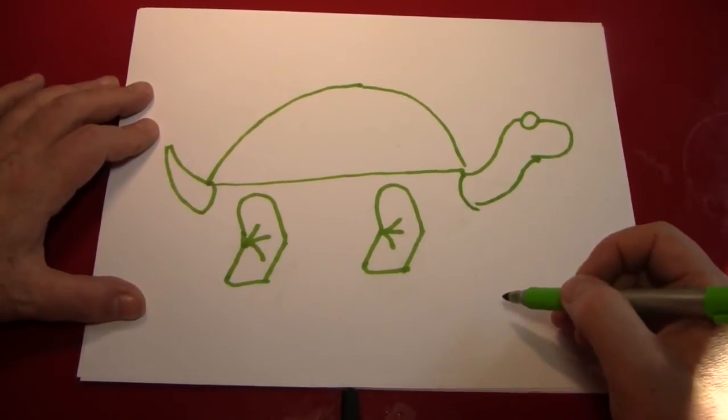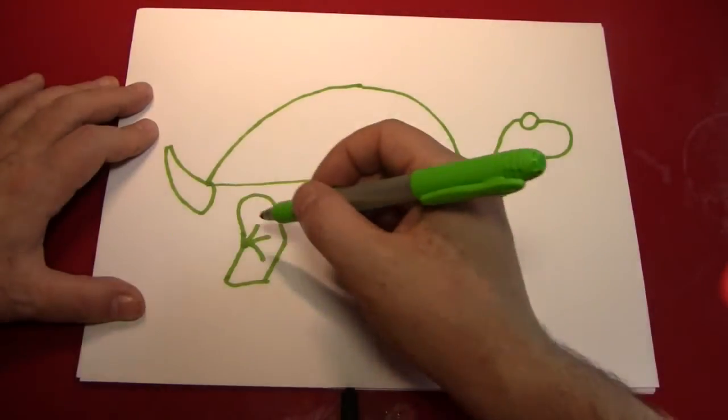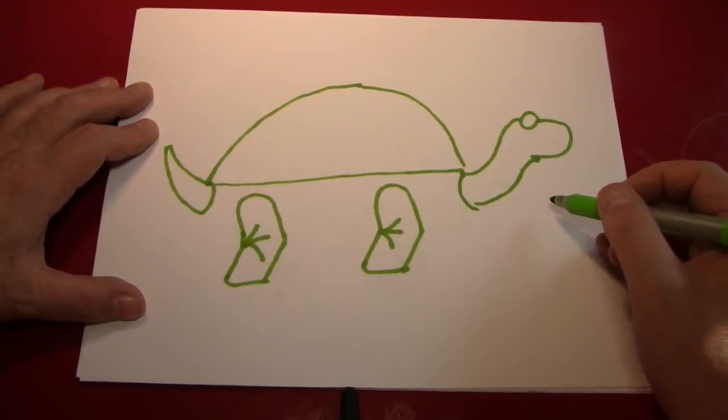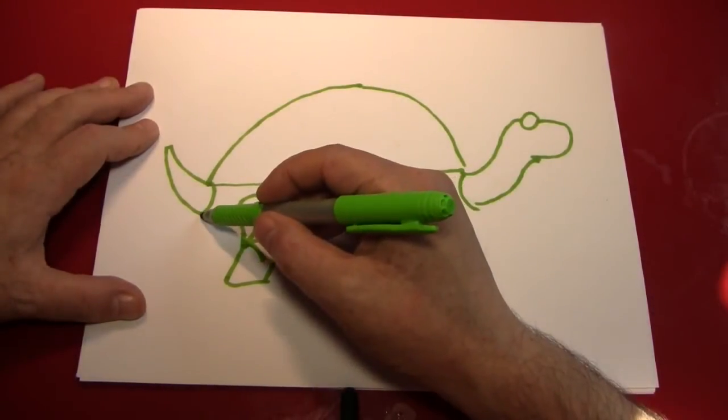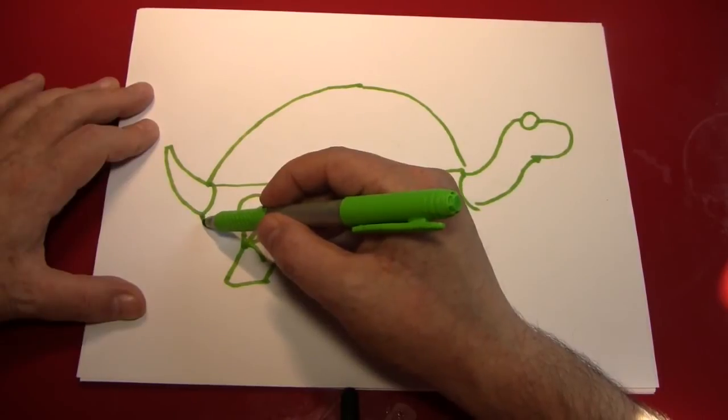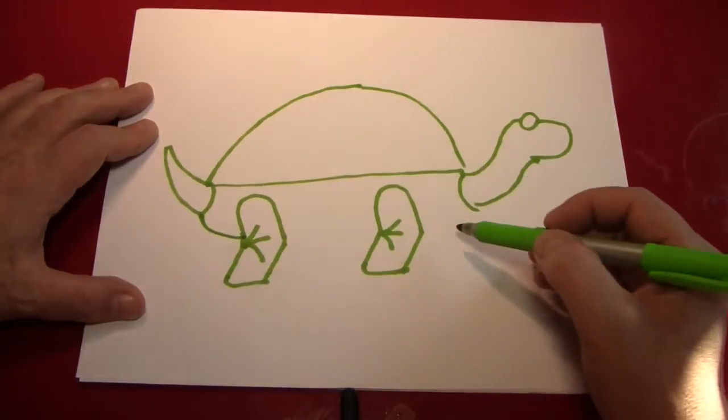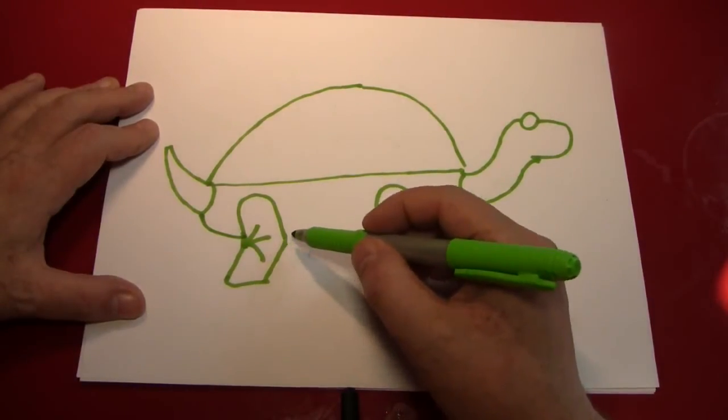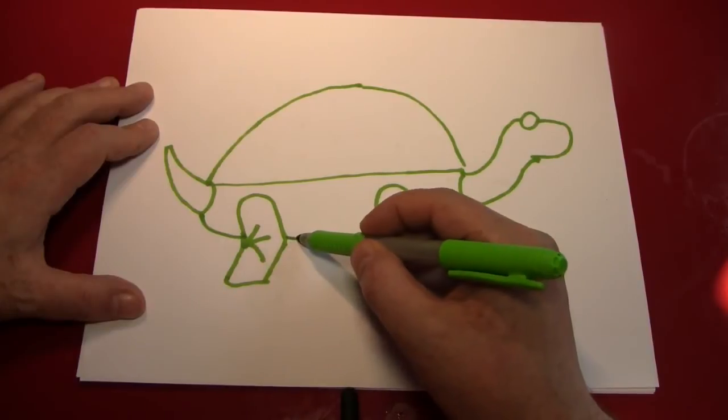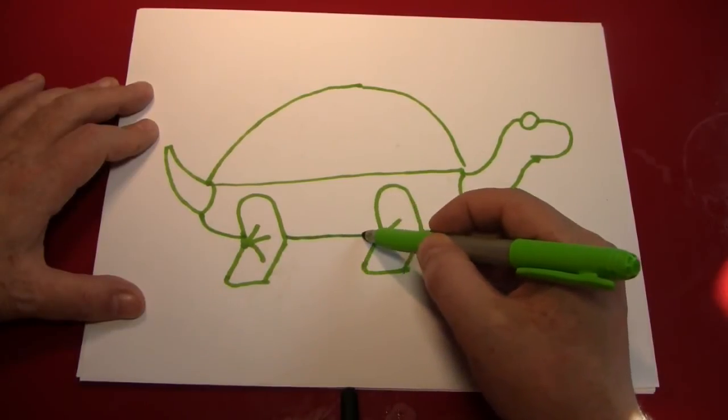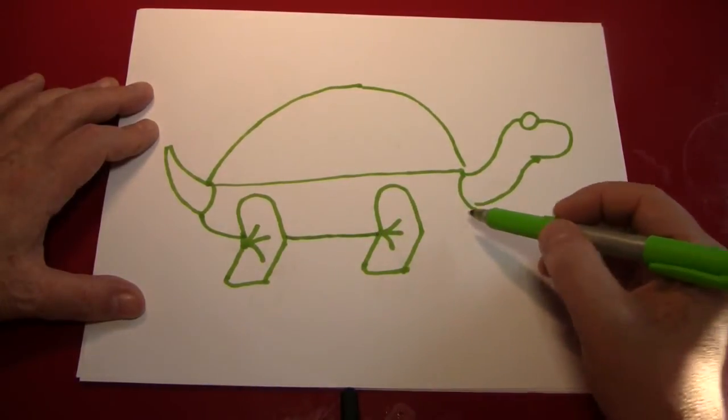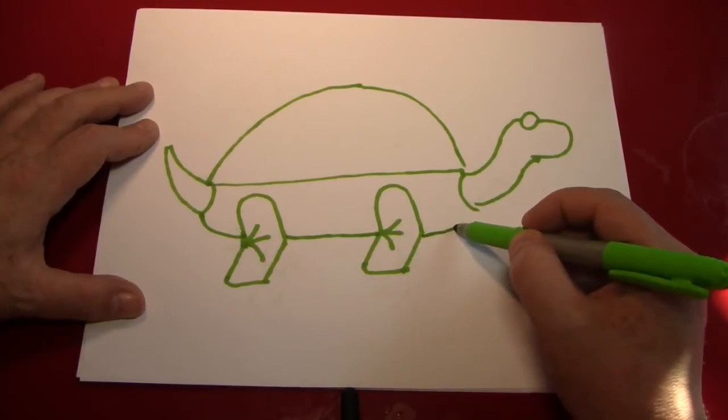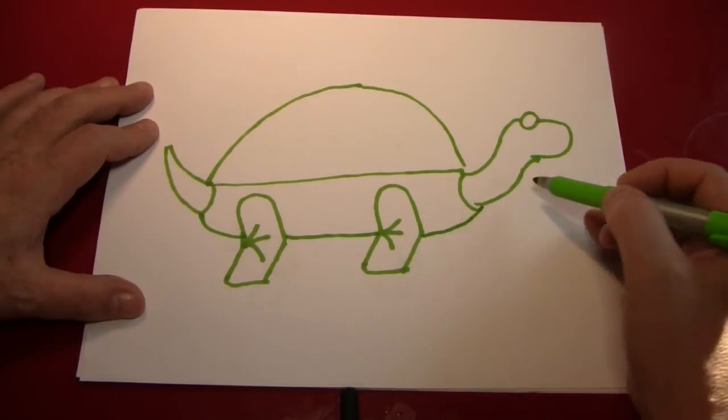Now for the bottom of the shell. And since we have the head, the tail, and the legs already done, we pretty much know where this has to be. So we'll start here, go down just a little bit, and curl under the leg like that. Then imagine where it would be on the other side. Continue it a little further until it gets to the back of that leg. And then over here, bring it back up to meet the turtle's neck hole.